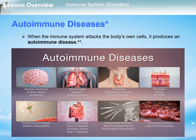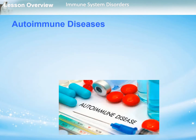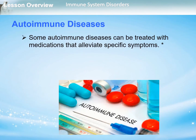In rheumatoid arthritis — visible in the picture at the bottom — antibodies attack connective tissues around the joints. Lupus is an autoimmune disease in which antibodies attack organs and tissues, leading to areas of chronic inflammation throughout the body. Some autoimmune diseases can be treated with medications that alleviate specific symptoms; for example, people with type 1 diabetes can take insulin.